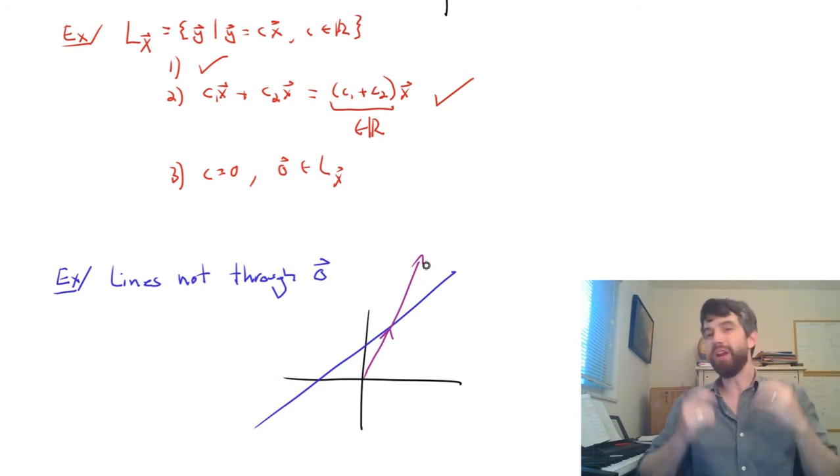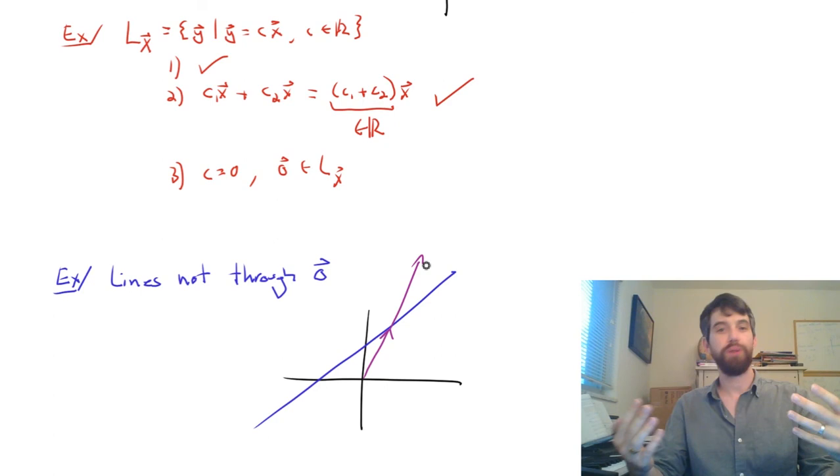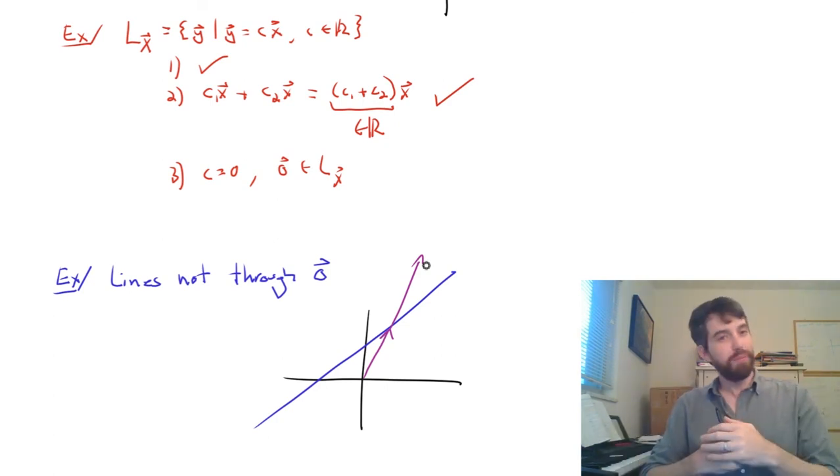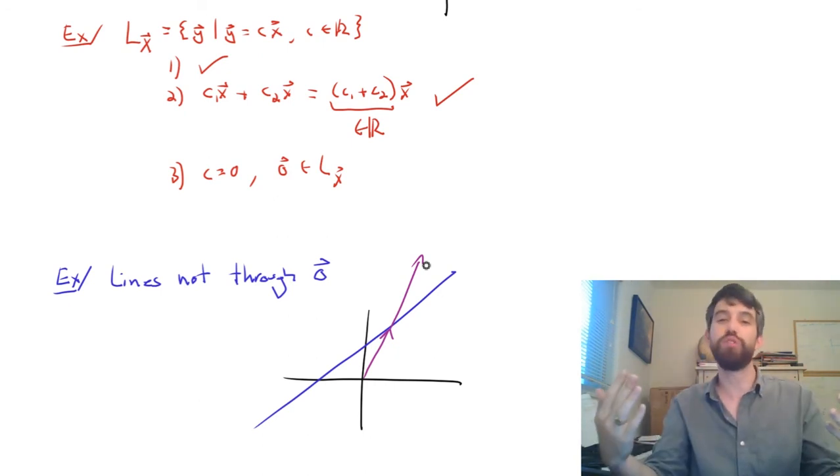So, in linear algebra, we're going to make this really big distinction between lines through the origin and lines not through the origin. If we're to go up some dimensions, say three dimensions, the subspaces it's going to turn out are going to be all of the planes, but only planes that go through the origin. And in higher dimensions, we'll call these analogues hyperplanes.